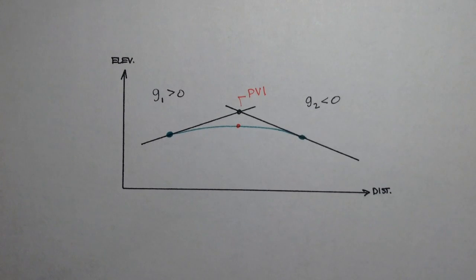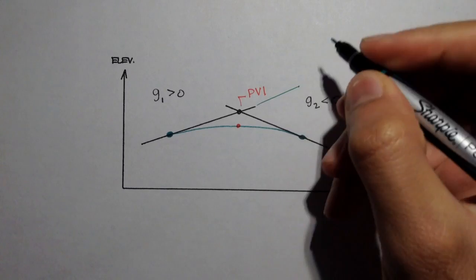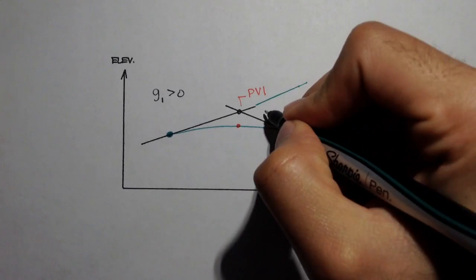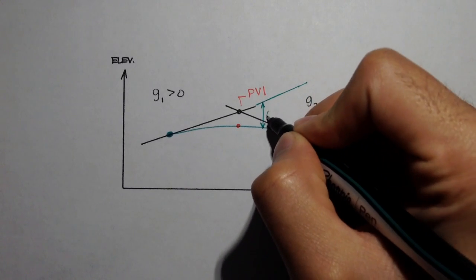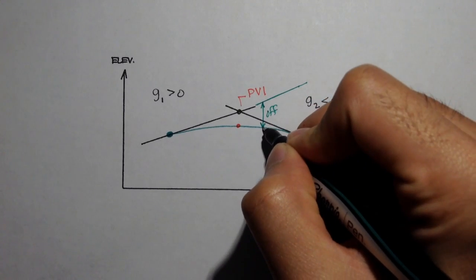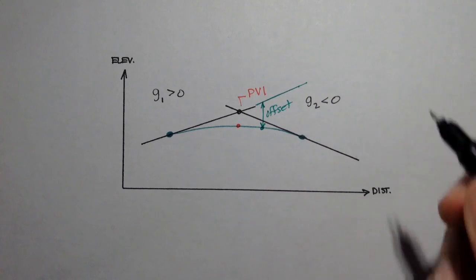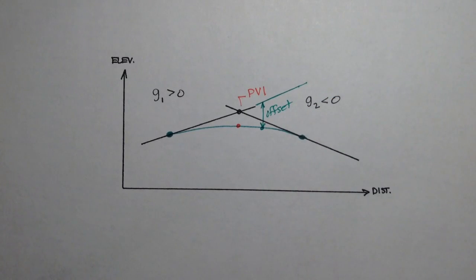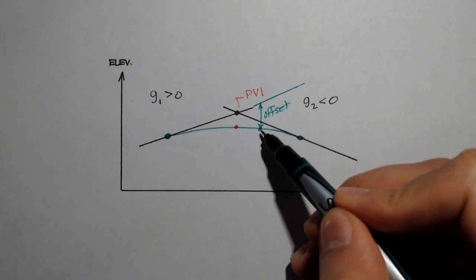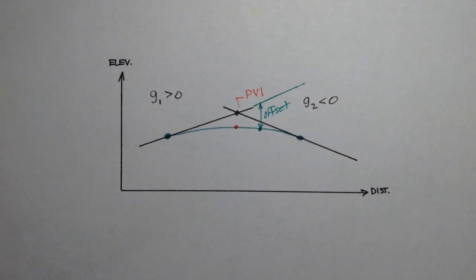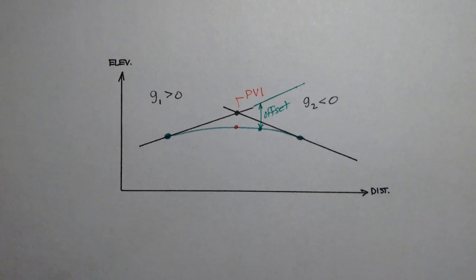The offset of a vertical curve is the distance between the entering tangent and any point along the vertical curve. That distance from the entering tangent to any point on the curve, measured vertically with respect to your axis, is called the offset.